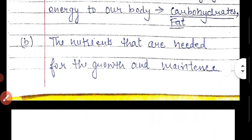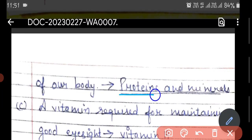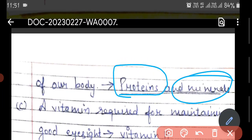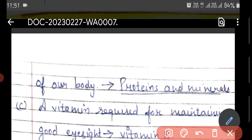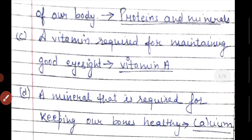The next question asks about the nutrient needed for the growth and maintenance of our body — that is proteins and minerals. Proteins and minerals are needed for the growth of our body. The vitamin required for maintaining good eyesight is vitamin A. Like carrots, which contain vitamin A — we need to eat more carrots so that our eyesight is fine.